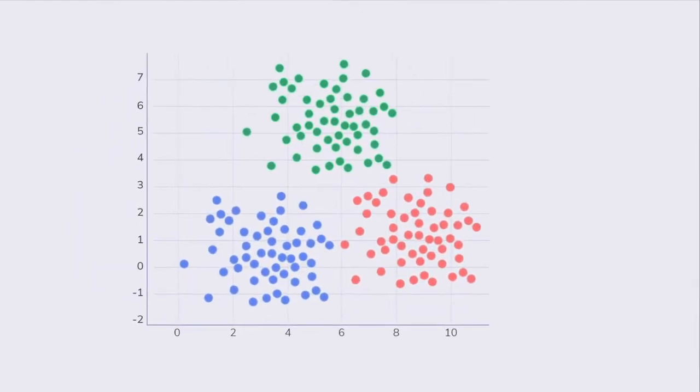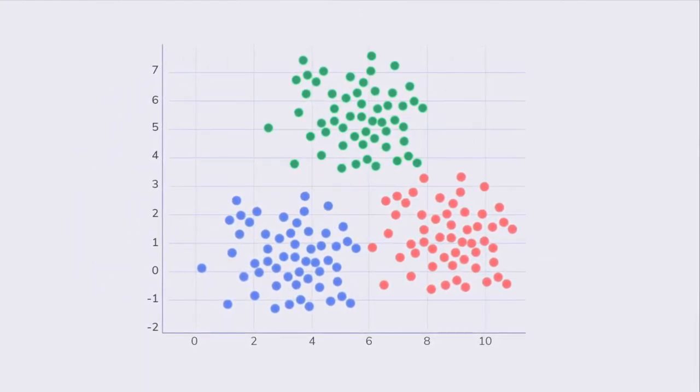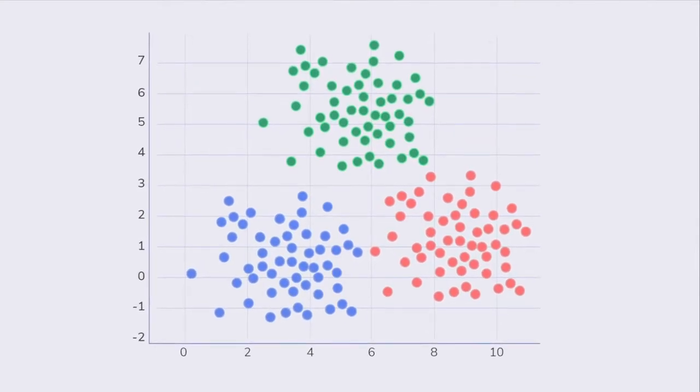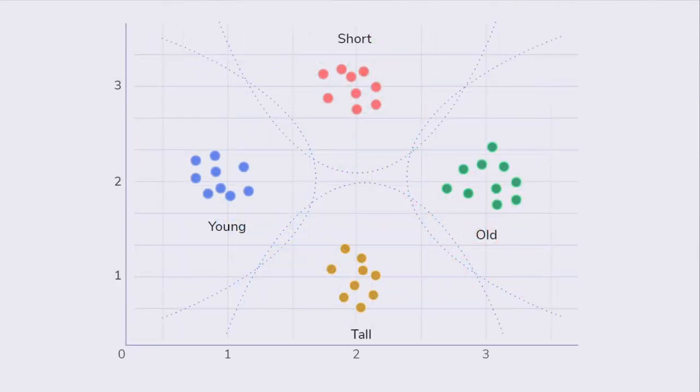To visualize this data, we can imagine a space with data points in them, similar to a night sky with stars. Here, the data points are placed differently depending on the values of their features. So someone old may be placed over to the right, someone young to the left, someone tall at the bottom, and someone short at the top.